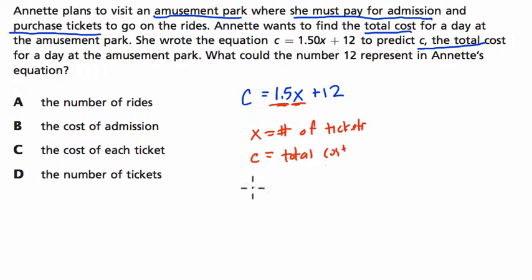I'm also thinking, okay, $1.50 is the cost per ticket. And then the only thing left is the $12 that we start with, and $12, I think, is the admission fee.